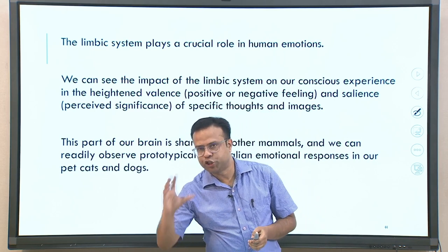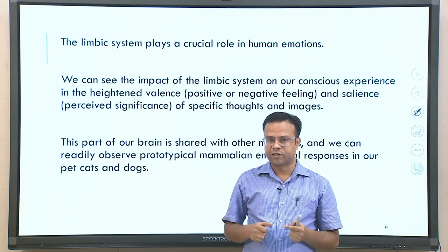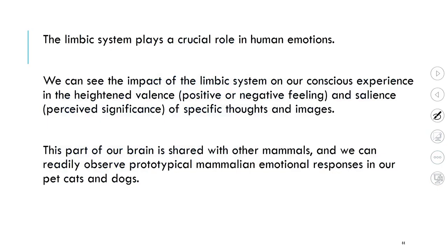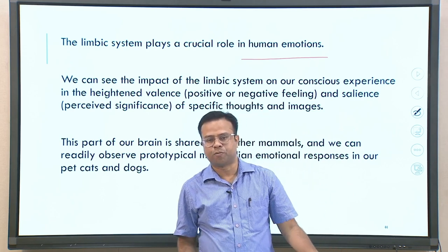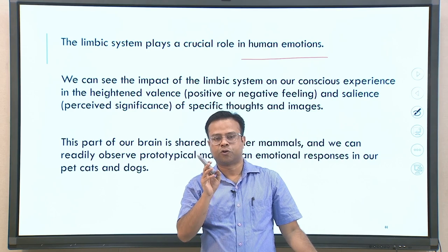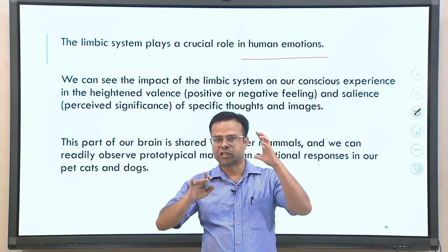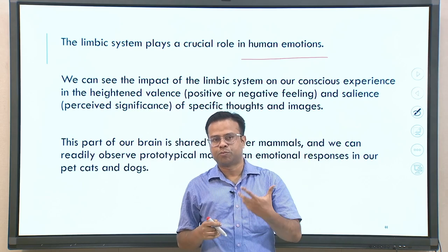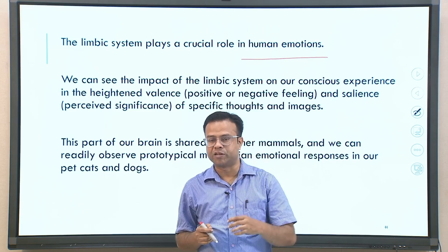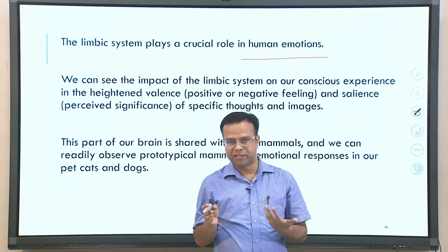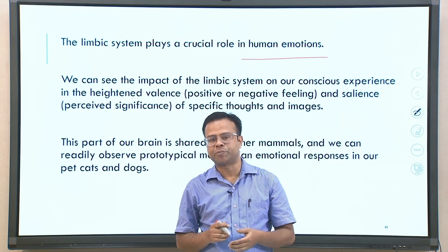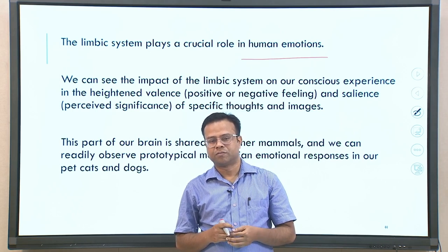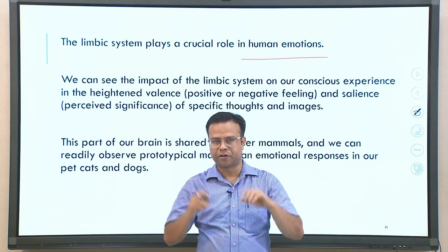The major functions of the limbic system involve the experience of emotions in the brain. We can see its impact in conscious experience — in heightened valence, positive and negative feelings, and the perceived significance of specific thoughts and images. Whenever we experience strong emotions, this limbic system becomes much more activated. This part is shared with mammals, which is why it is called the mammalian brain — we can readily observe prototypical mammalian emotional responses in pets like cats and dogs.